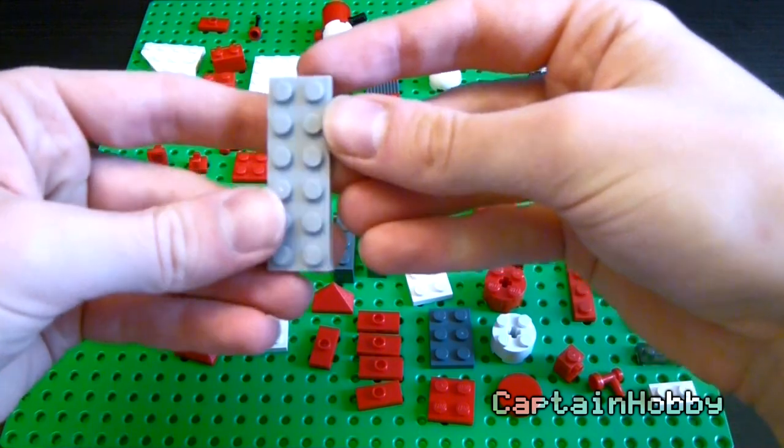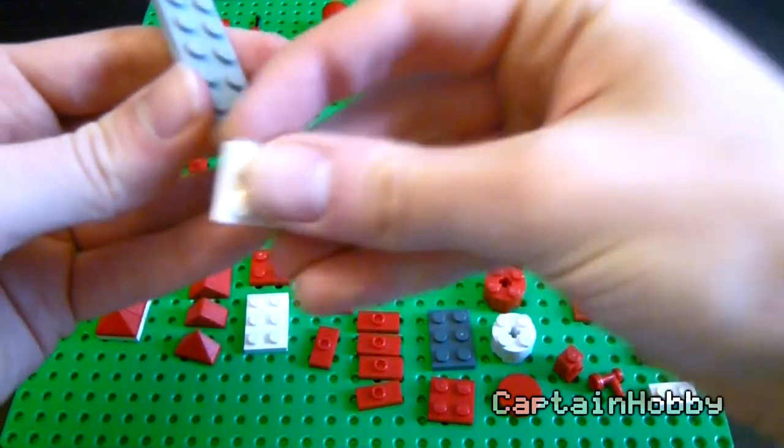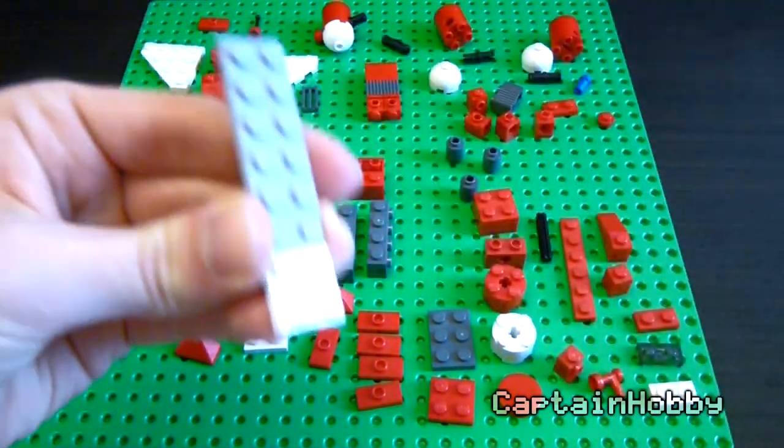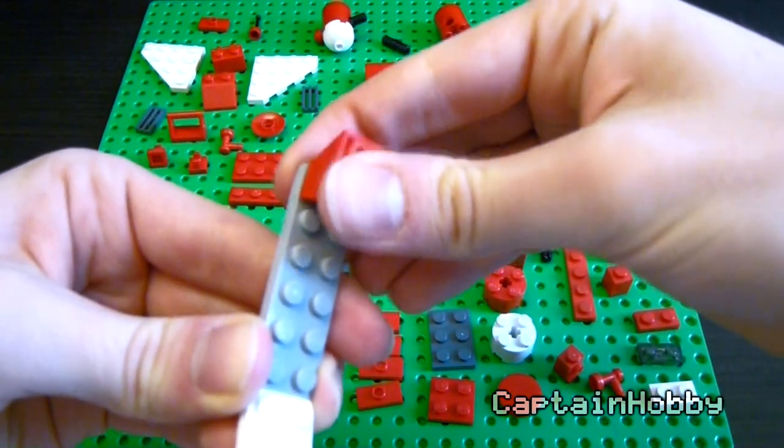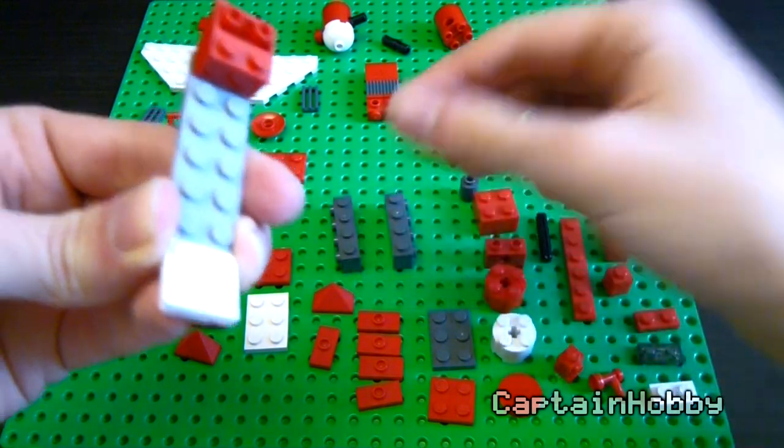First thing you'll want to do is take a 2x6 in light gray, a plate, and a 2x2 in white. You'll want to hold these together with a couple of bricks.